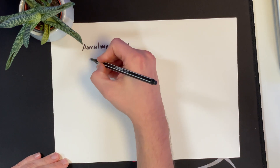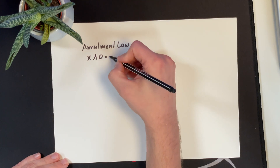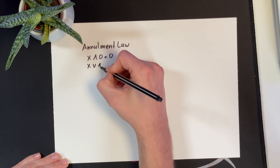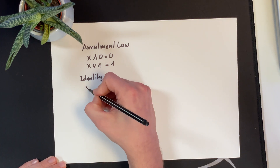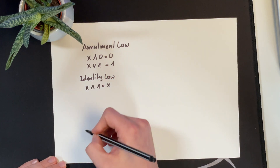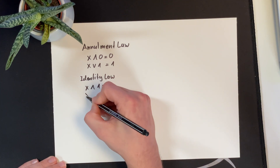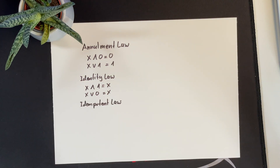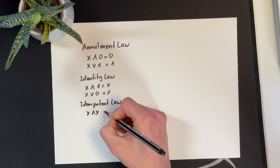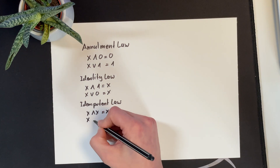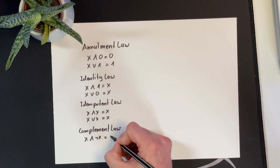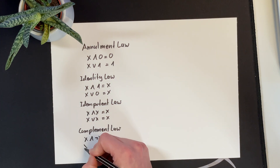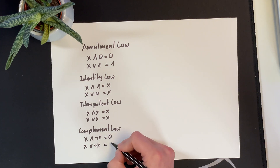The first law is the annulment law: X AND 0 always results in 0, and X OR 1 always results in 1. Closely related is the identity law: X AND 1 always results in X, and X OR 0 also results in X. Then there is the idempotent law: X AND X equals X, and X OR X equals X. The complement law states that X AND NOT X always results in 0, and X OR NOT X always results in 1.